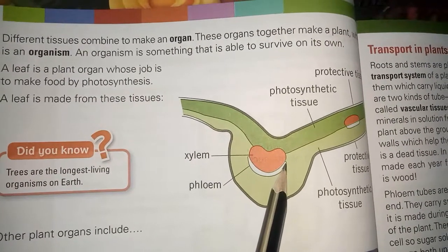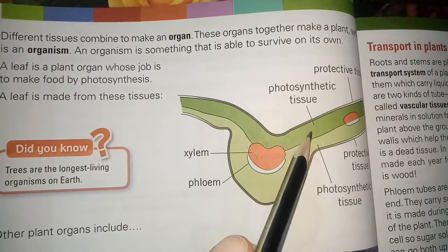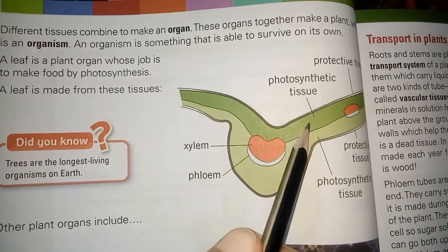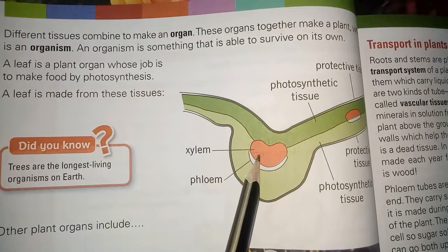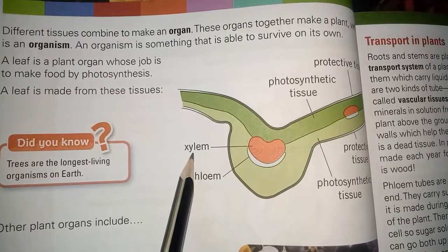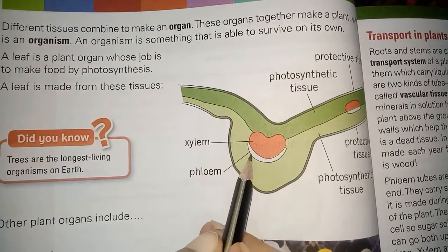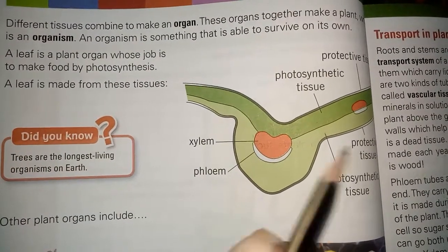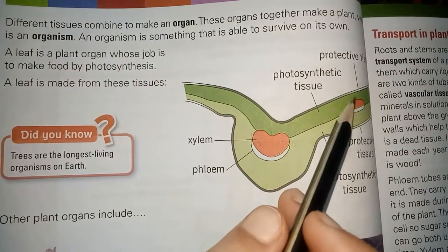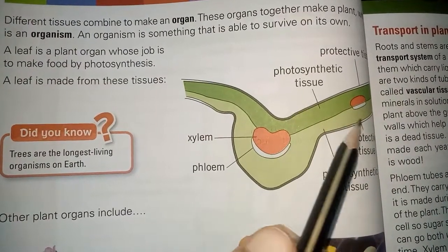Every tissue has its own job. Photosynthetic tissues are involved in photosynthesis, that is, the formation of food. Xylem tissues are involved in the conduction of water and minerals. Phloem tissue is responsible for the conduction of food. Protective tissues are responsible for preventing any kind of damage.